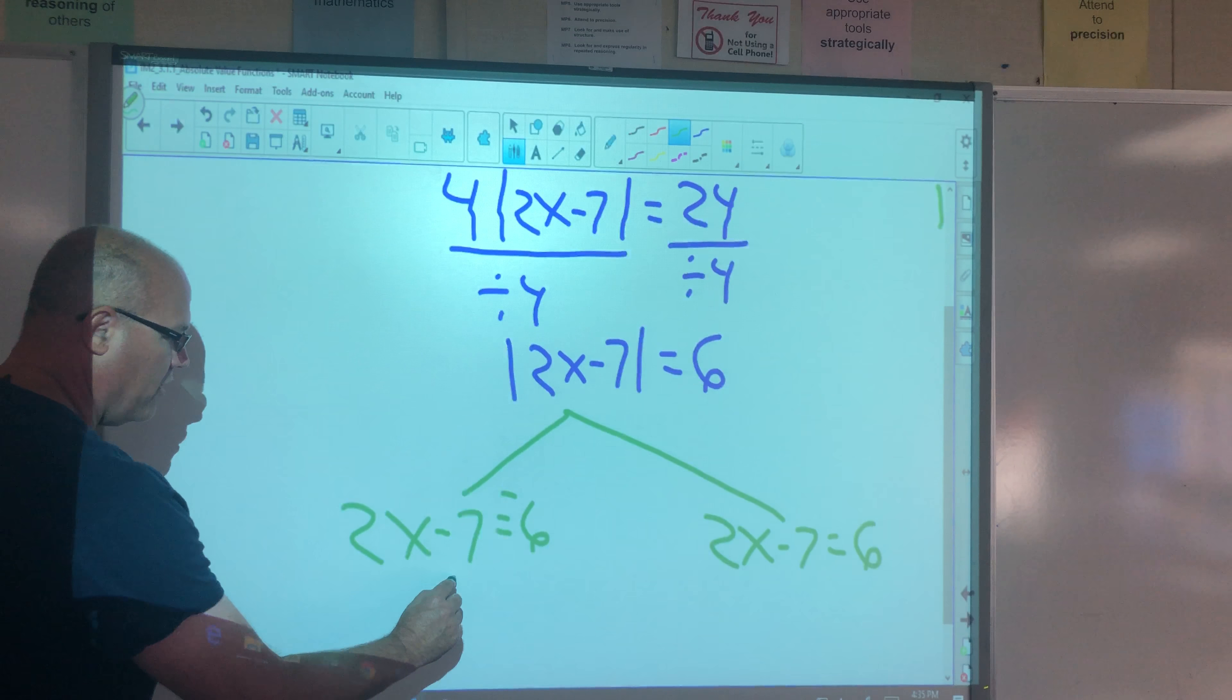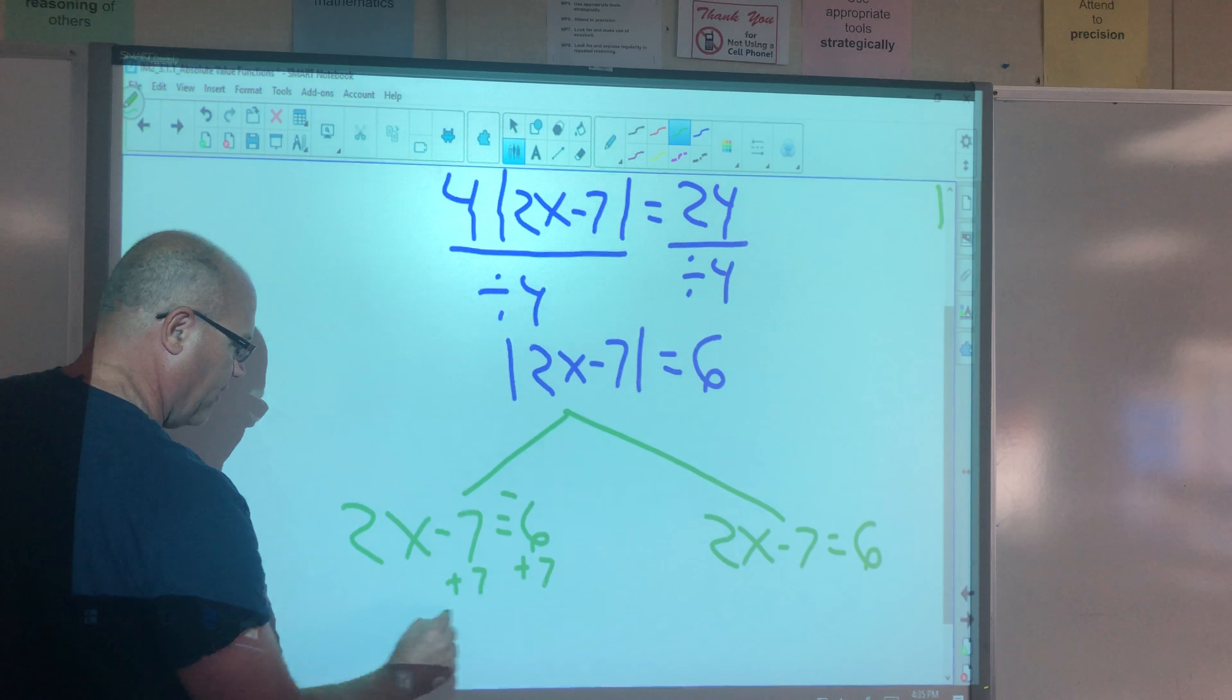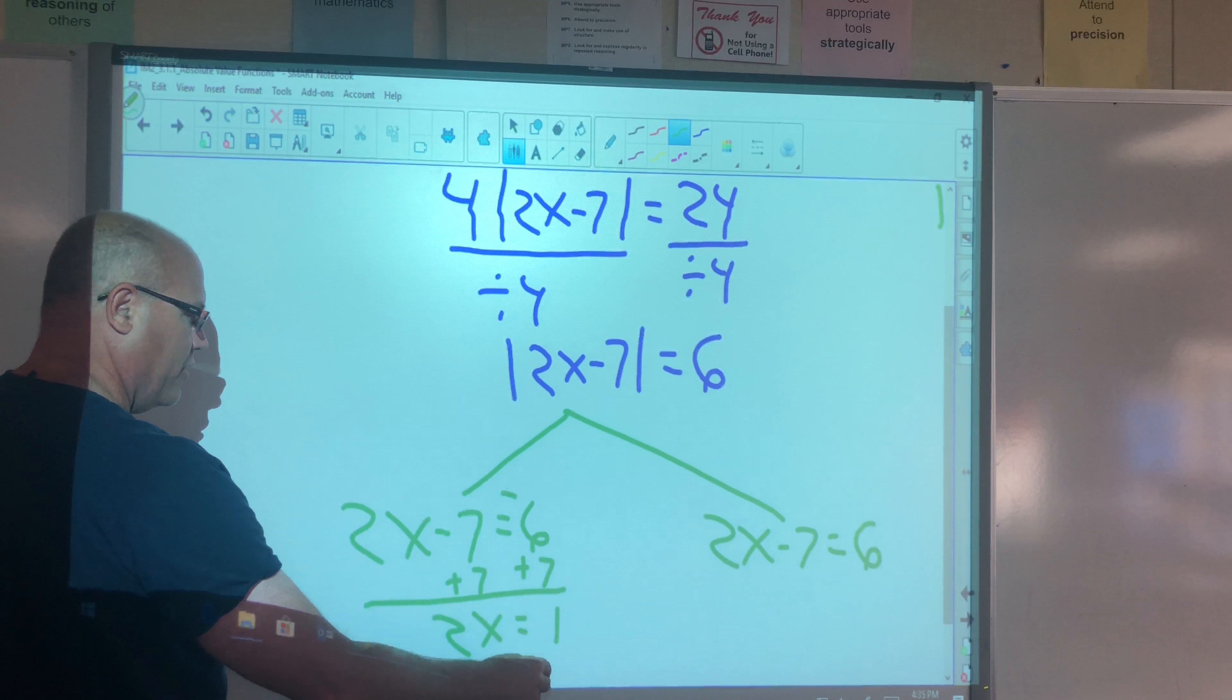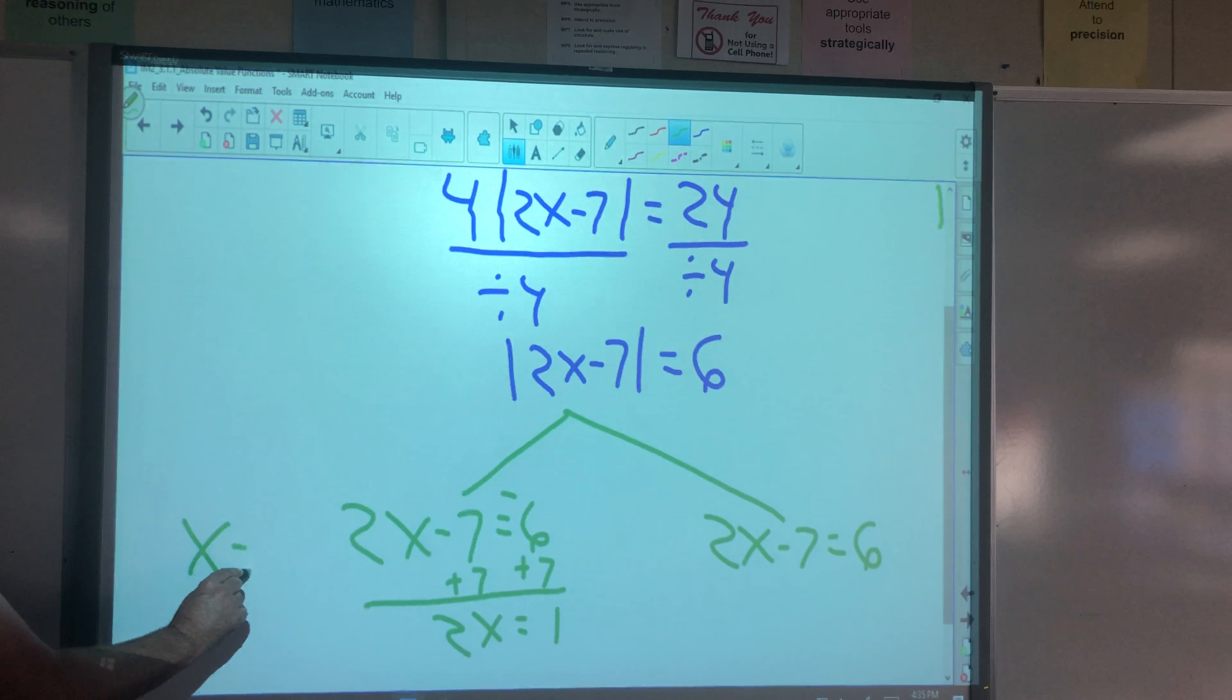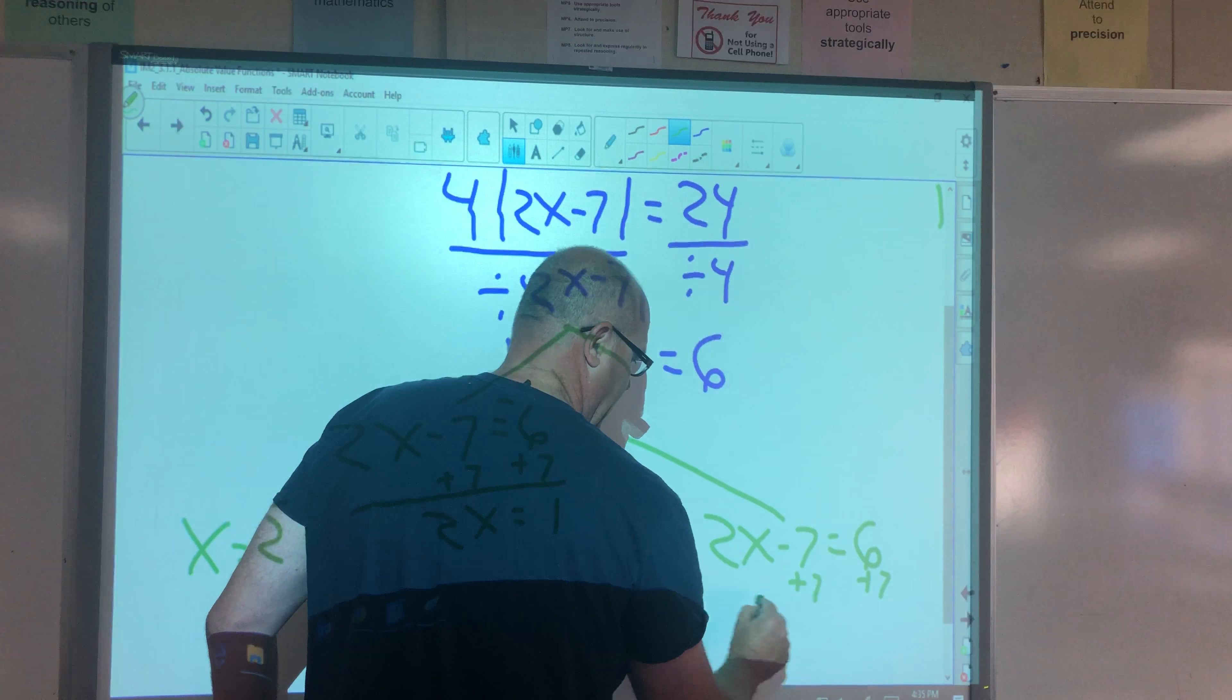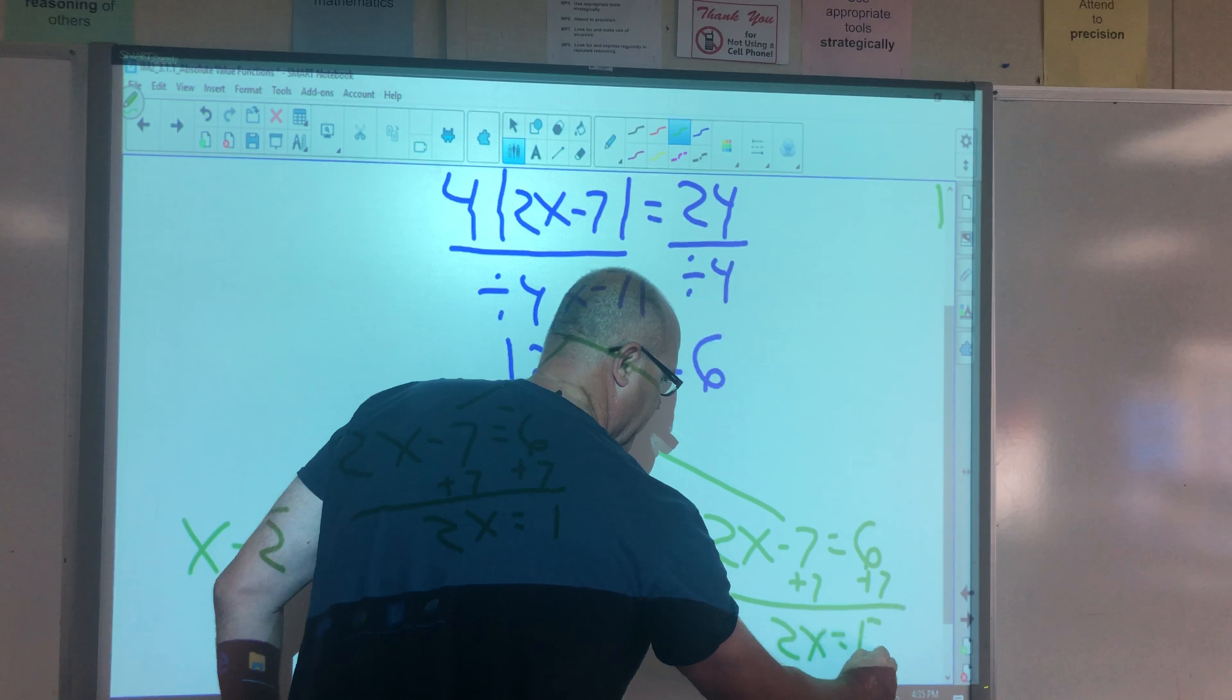We're going to solve these. Add 7 to both sides. 2x equals 1, divide by 2. So we get x equals 1 half. This side, add 7, add 7.